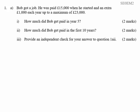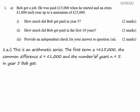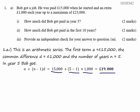How much did Bob get paid in year 5? This is clearly an arithmetic progression. The first term is £15,000, the common difference is £1,000, and the number of years is 5. So Bob got the first term plus n minus 1 times £1,000, which gives us a total of £19,000.